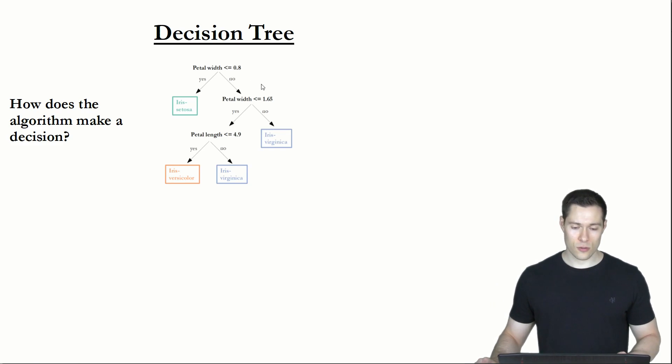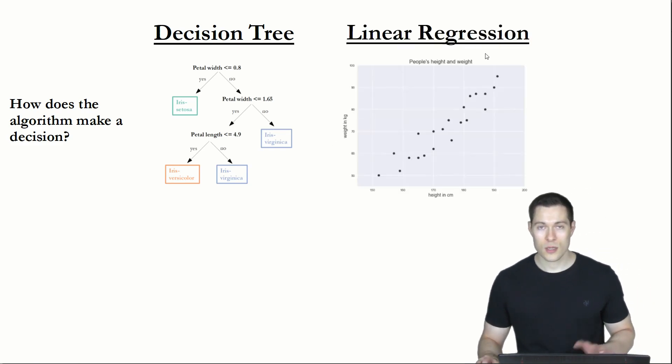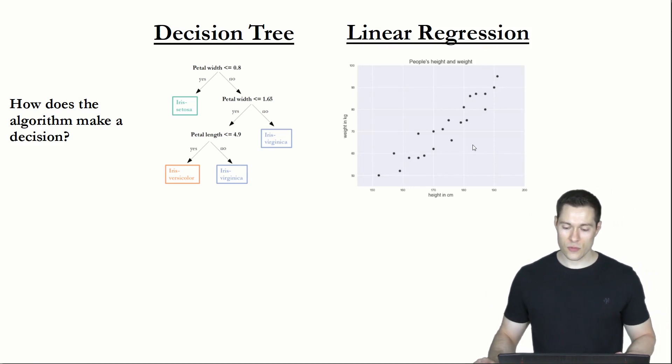And now let's look also at another example which is the linear regression algorithm. The way that you make a decision here is that you first realize that there seems to be a linear relationship between this variable and that variable, so between the height of a person and that person's weight. And since there is such a linear relationship, it can be approximated with such a line.